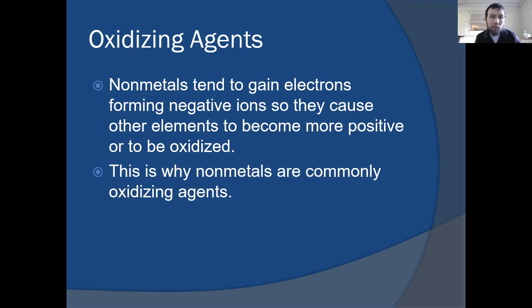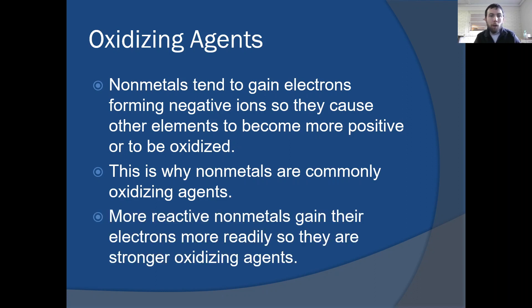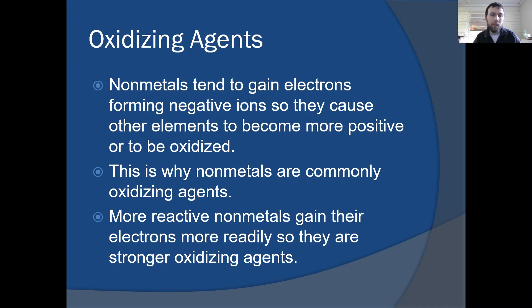Non-metals are the common oxidizing agents, but keep in mind we can have instances where metals can be oxidizing agents, and likewise non-metals can be reducing agents — though the circumstances for that are going to be very unique. The more reactive the non-metal, the more readily it gains electrons, and therefore it's going to be a stronger oxidizing agent — a substance that causes other elements to lose their electrons.